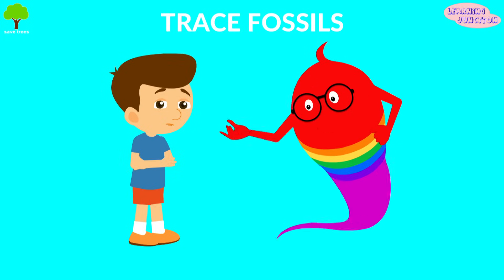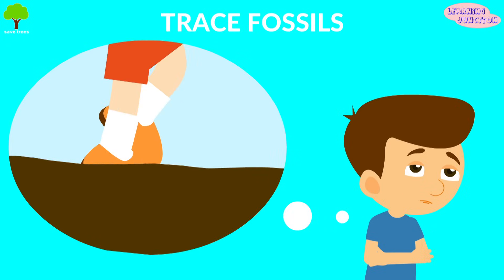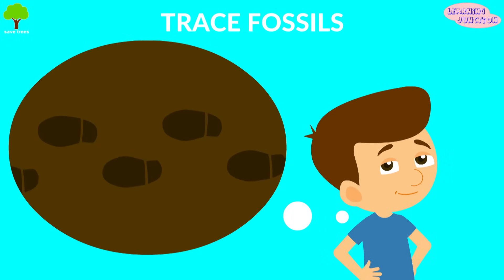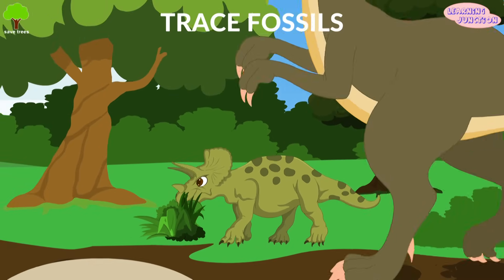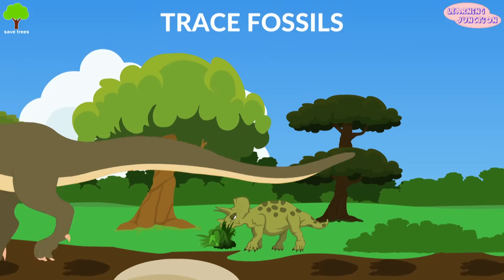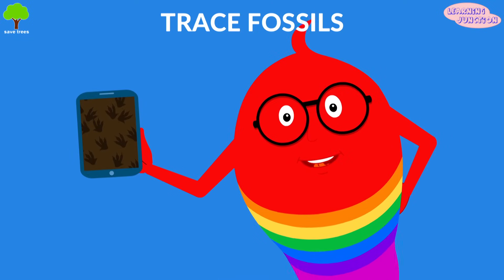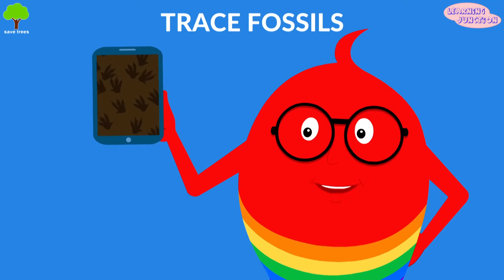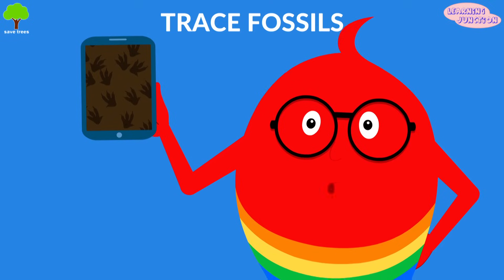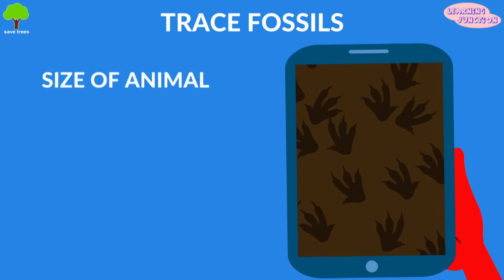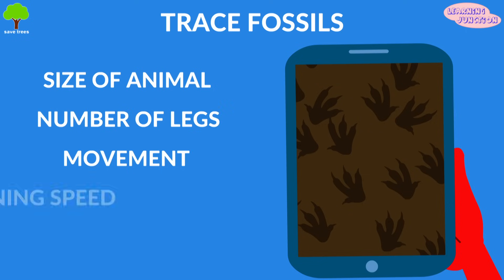Trace fossils — what happens when you step in mud? Millions of years ago, when dinosaurs roamed the earth, they also made large footprints. Fossilized footprints are called trace fossils because they were made by the activity of the dinosaurs. Footprints can tell us about the size of the animal, the number of legs they had, how they moved, and how fast they could run.